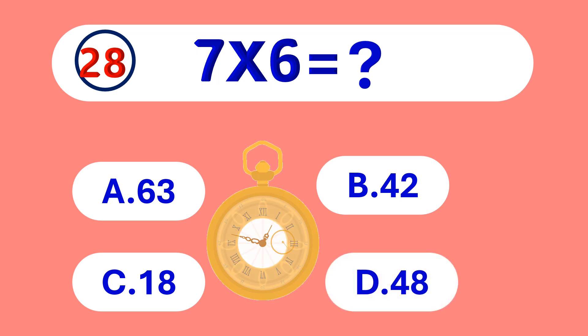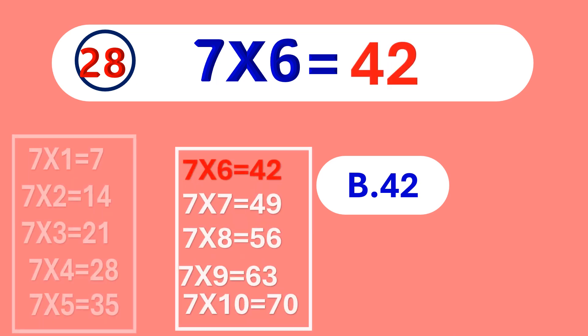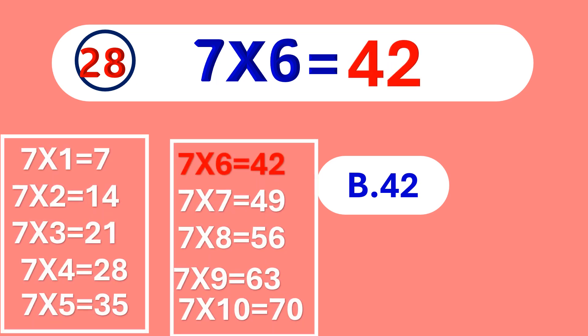7 times 6 is equal to... 42. 7 times 6 is 42.